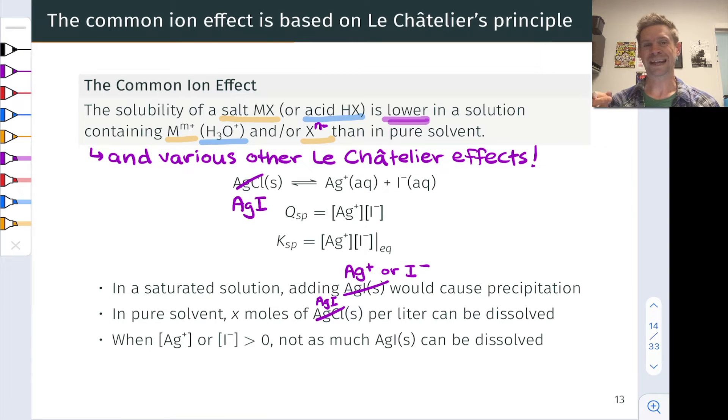In pure solvent, let's imagine that we can dissolve x moles of AgI per liter of solution. This is what we've called the molar solubility of AgI in pure water. This means that Ksp is equal to x times x, since we get one mole of Ag+ and one mole of I- for every mole of AgI. So Ksp is equal to x squared.